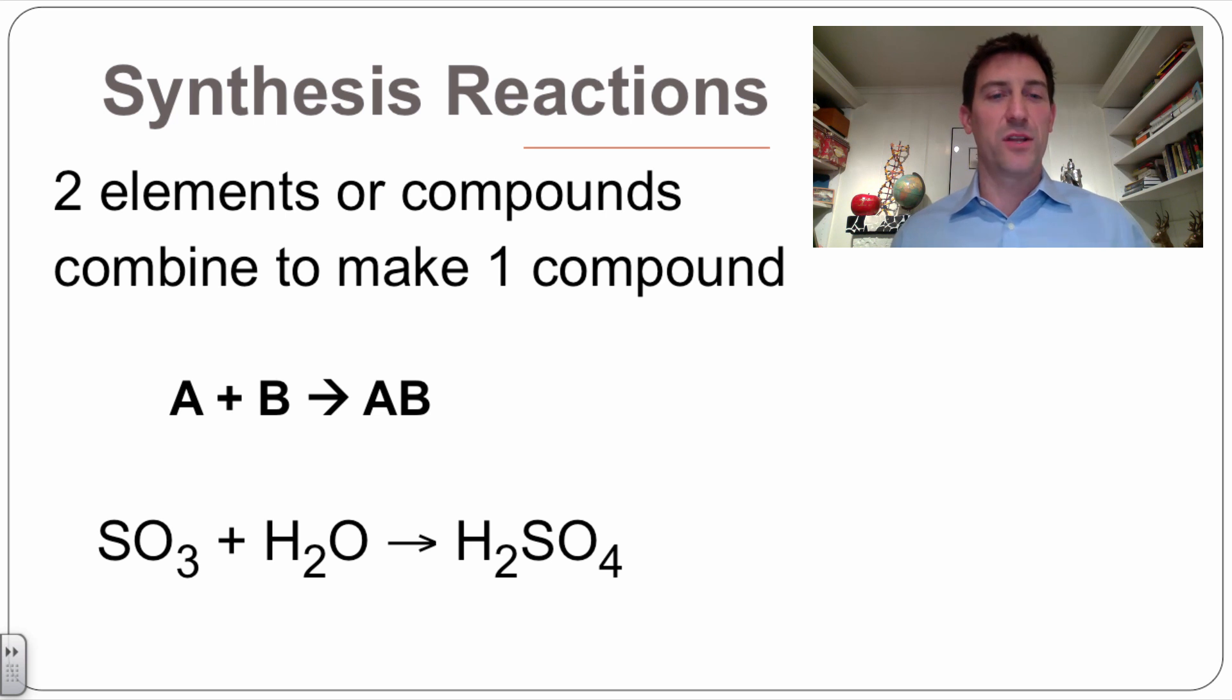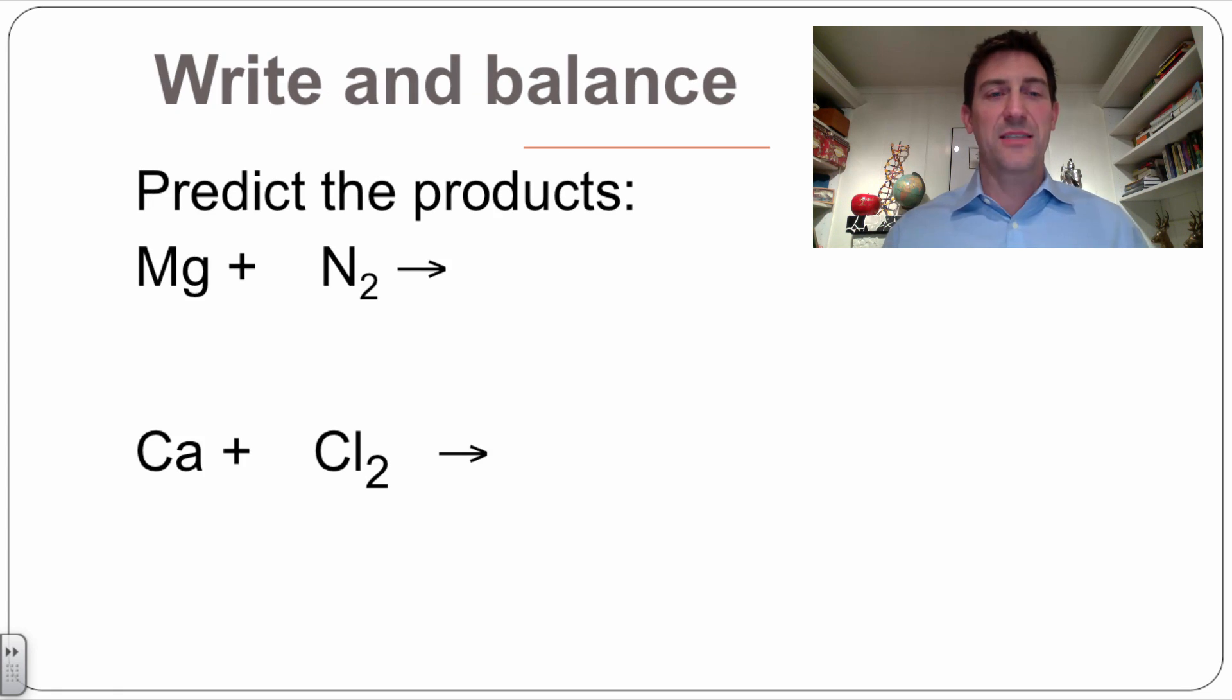One example of that, real life example here, is sulfur trioxide mixing with water to make sulfuric acid. You've got the sulfur trioxide, you've got the water, they come together, and they make a compound, sulfuric acid.